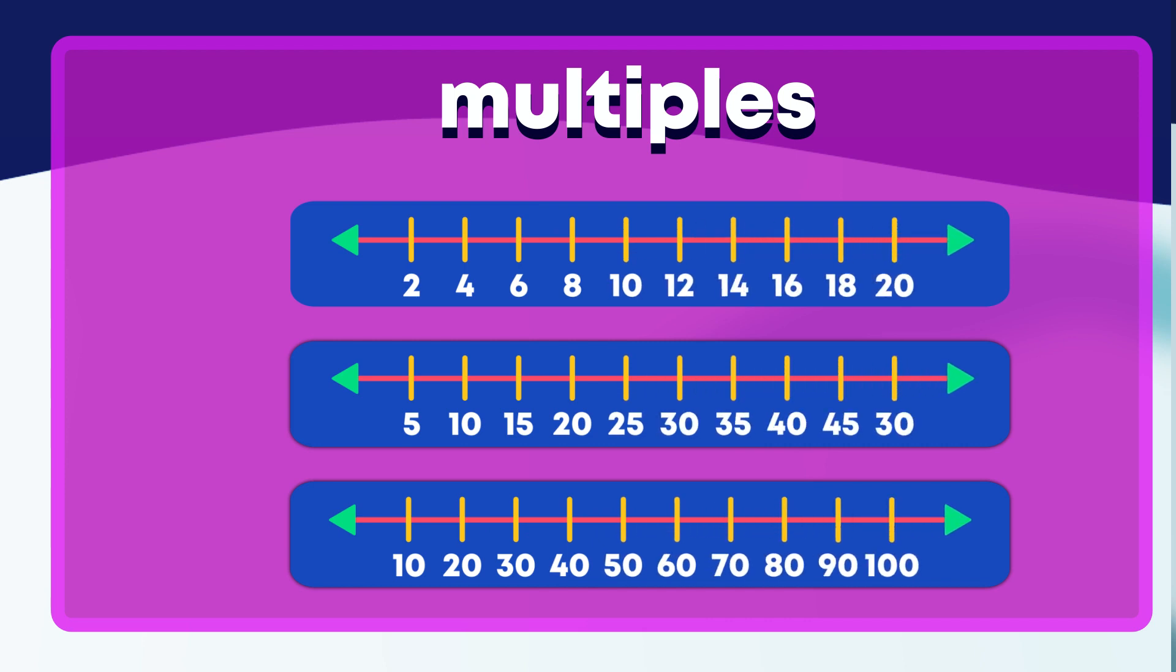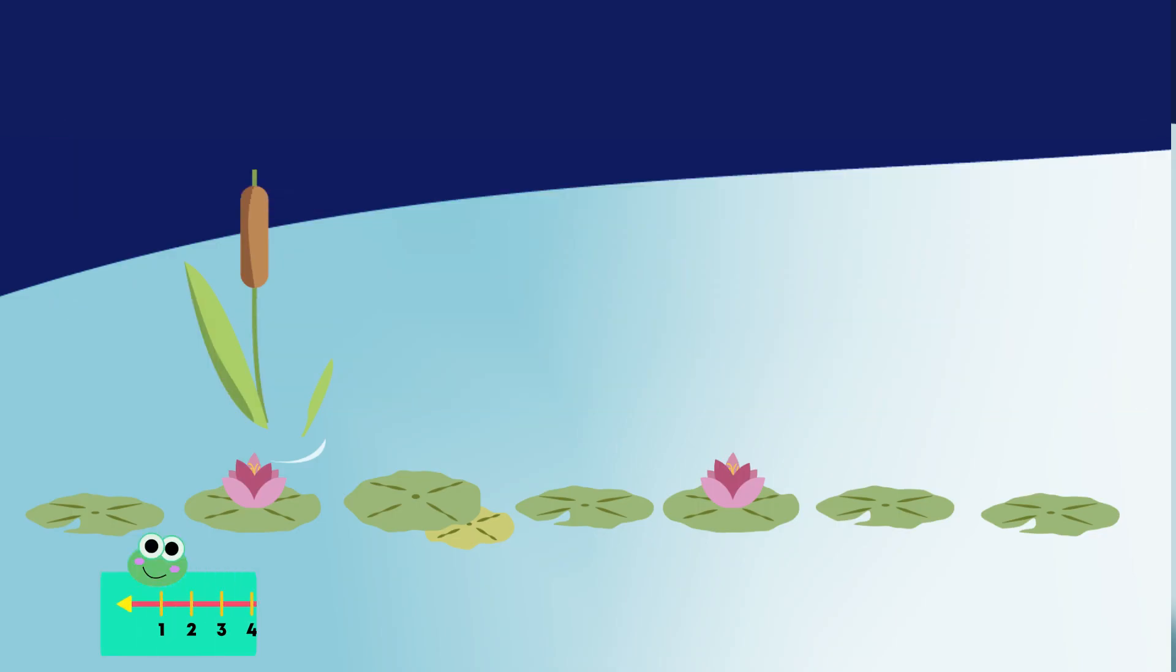Which number line is showing the multiples of 2? This one. Well done. These are the multiples of 5 and these are the multiples of 10. Let's learn how to count in multiples of 3. Count along as the frog hops.